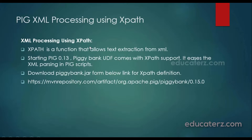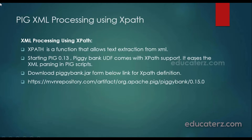From Pig version 0.13 onwards, the piggybank.jar comes with XPath support, which allows you to do XML parsing with the help of XPath very easily. You can do text extractions — whatever text you want to extract between tags, you can directly do that with XPath. However, in the Cloudera Quickstart VM the default piggybank.jar under /usr/lib/pig does not have the XPath definition. So I recommend downloading the piggybank.jar from the MVN repository link below, which gets automatically downloaded to your /home/cloudera/Downloads folder.